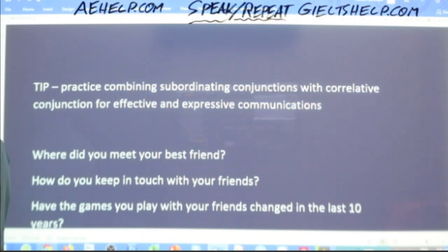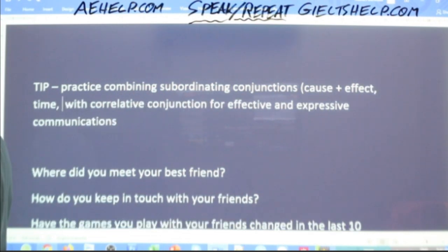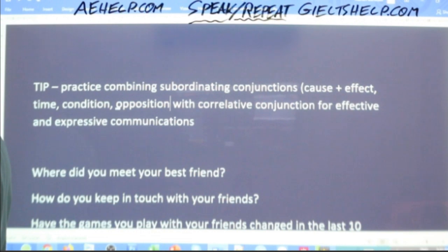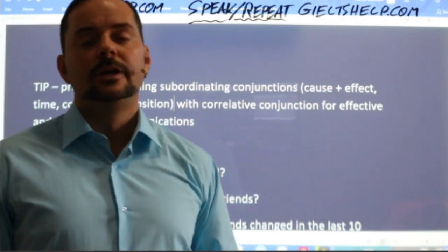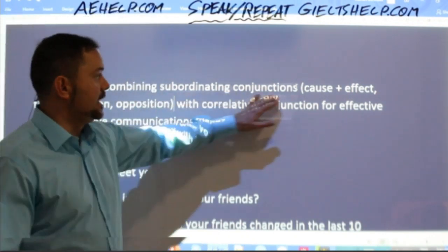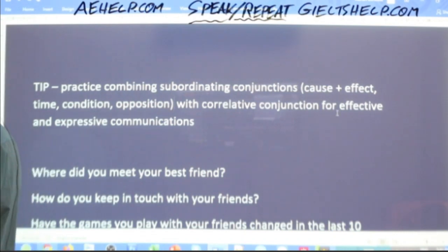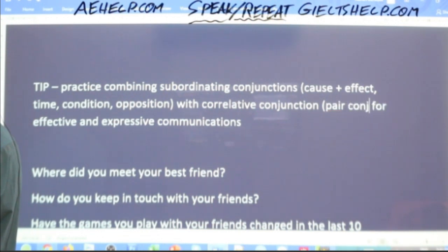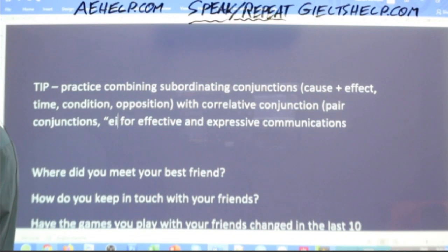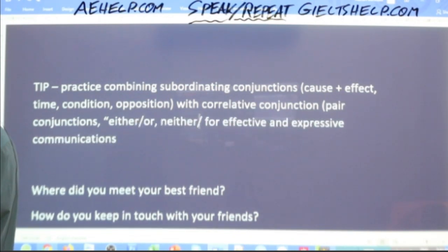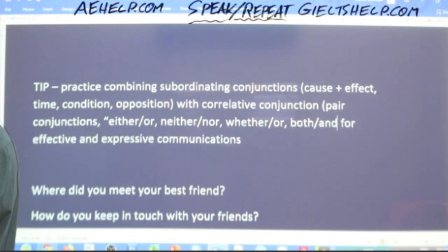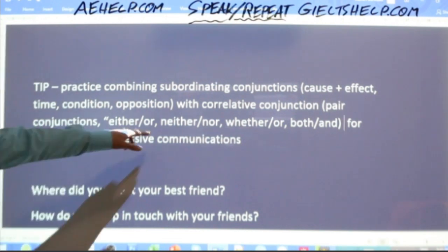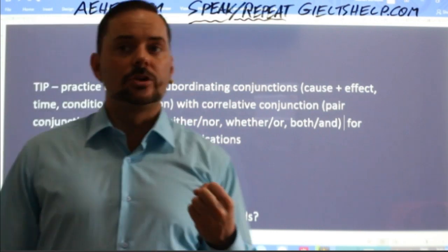Subordinating conjunctions cover cause and effect, time, condition, and opposition. Correlative conjunctions are your paired conjunctions — like 'either/or,' 'neither/nor,' 'whether/or,' 'both/and,' and a few more. Combining these two types creates very strong, clear communication. If you aren't familiar with subordinating conjunctions, just Google it — you'll find a lot of information. Work on combining these for more expressive answers.